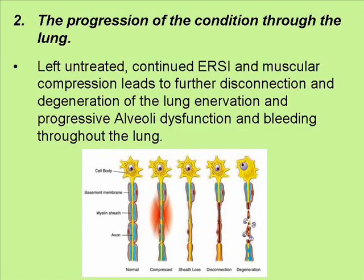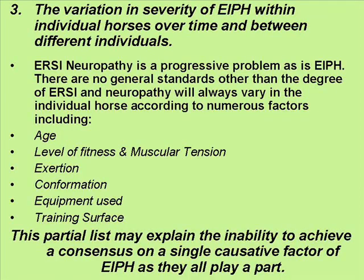Number two: the progression of the condition through the lung. Left untreated, continued ERSI and muscular compression leads to further disconnection and degeneration of the lung innervation and progressive alveolar dysfunction and bleeding throughout the lung. Number three: the variation of severity of EIPH within individual horses over time and between different individuals. ERSI neuropathy is a progressive problem, as is EIPH. The degree of ERSI and neuropathy will always vary in the individual horse according to numerous factors including age, level of fitness and muscular tension, exertion, confirmation, equipment use, and training surfaces.